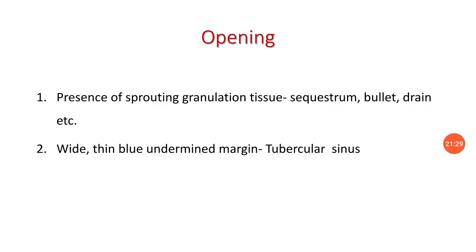A diagram shows pilonidal sinus at the natal cleft with two to three openings — one primary and two secondary openings present on both buttocks. Regarding the opening: presence of sprouting granulation tissue around the opening is suggestive of sequestrum, a bullet, or a drain inside. In tubercular sinus, the opening will be wide, thin, blue, and the margins will be undermined.